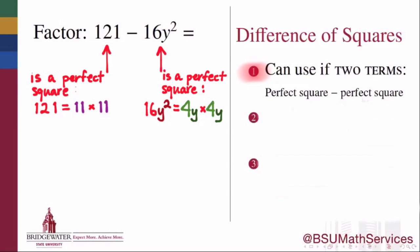So the difference of squares method can be used at any time to factor a two-term expression which is a subtraction of one perfect square minus another perfect square. Because that's the kind of expression we have here, we can use the difference of squares method to factor it.